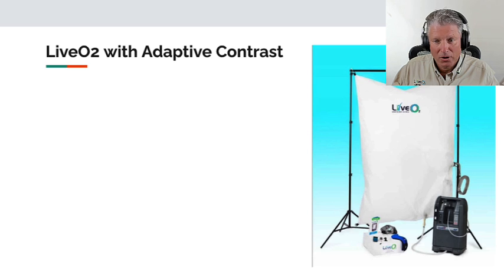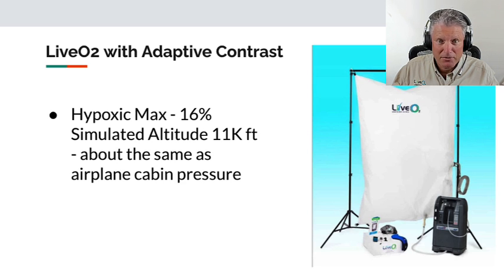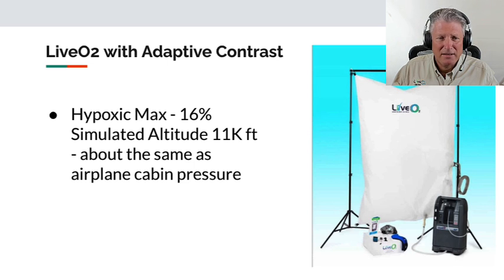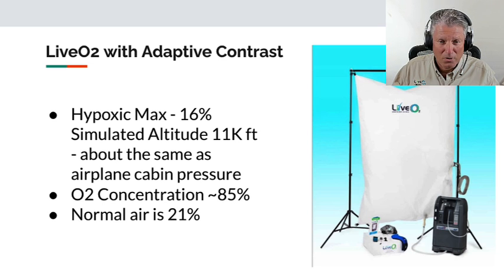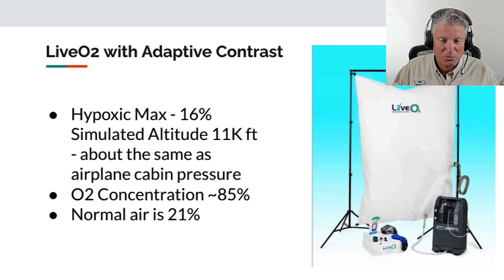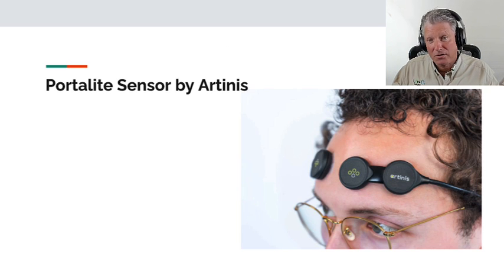To do the protocol, we used LiveO2 with standard adaptive contrast. It has a high hypoxic max of about 14 to 16 percent, simulated altitude of about 11,000 feet — roughly the same as aircraft cabin pressure in a commercial airliner. When you switch to O2, it's a concentration of 85 percent, while normal air is 21 percent, so it's roughly four atmospheres worth of oxygen. The hypoxia is a critical element because it enables the body to establish maximum blood flow to and through the brain.